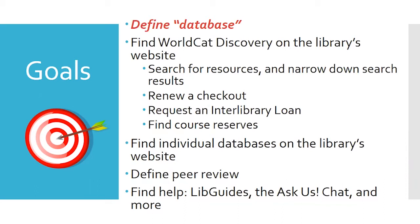A question came up about the difference between our library's electronic databases and Google Scholar. With our library databases, they're integrated into our system so you can search them all at once. Google Scholar, on the other hand, often only gives partial text access — you find information about the article but maybe not the full article. I haven't kept fully up to date with Google Scholar since I've been using library resources, but I can look into it more and get back to you after the presentation.